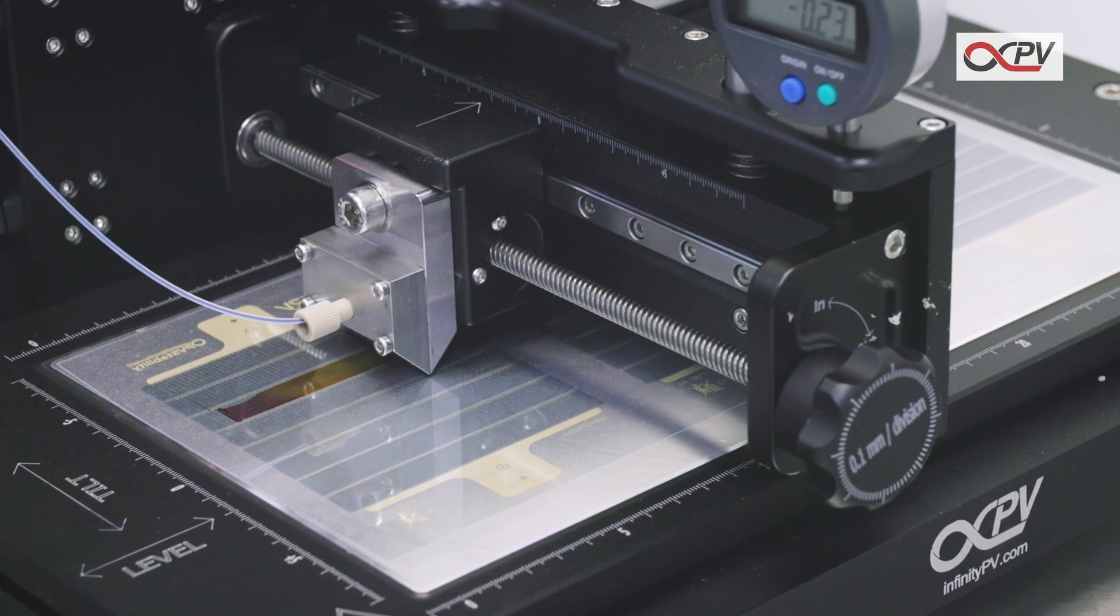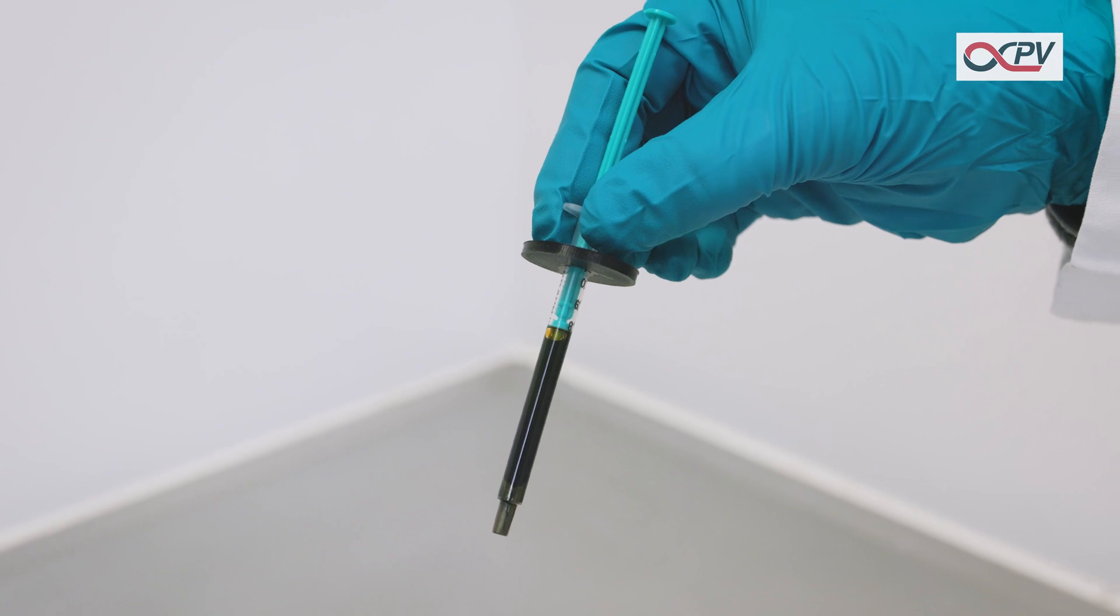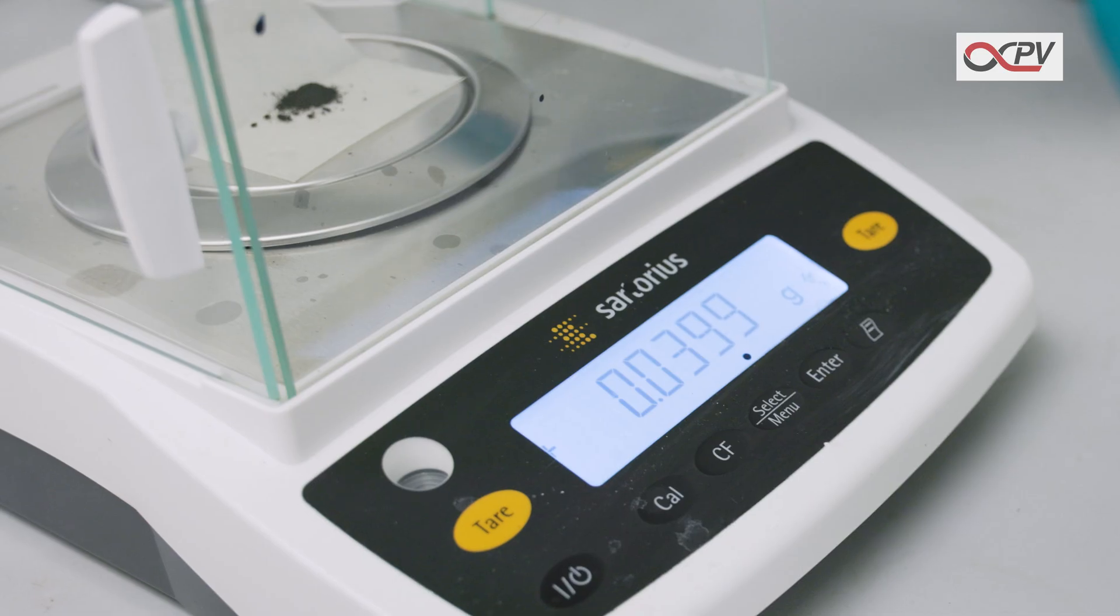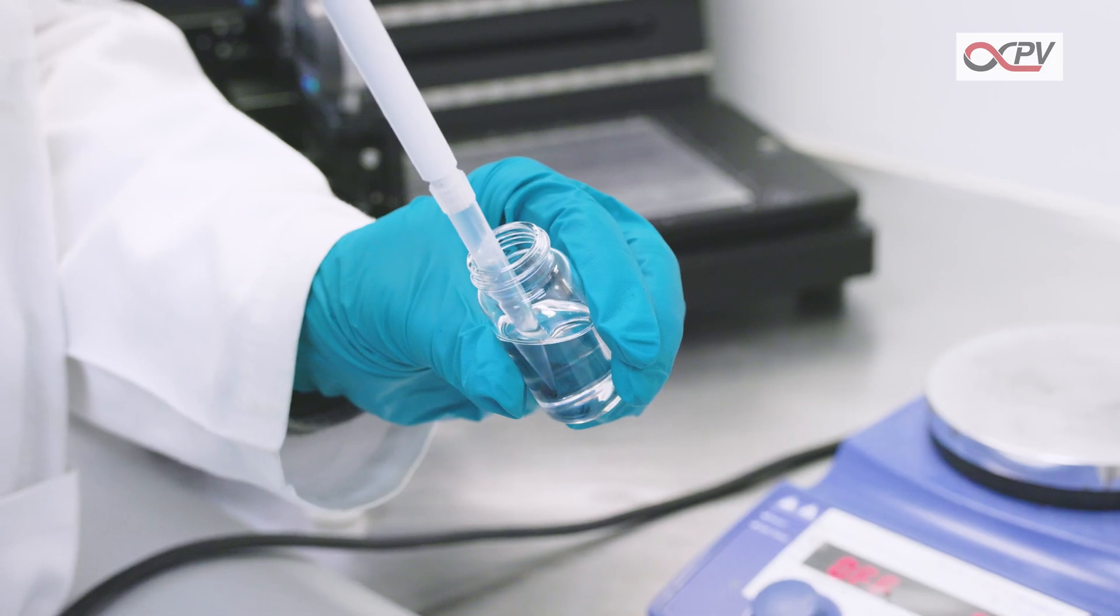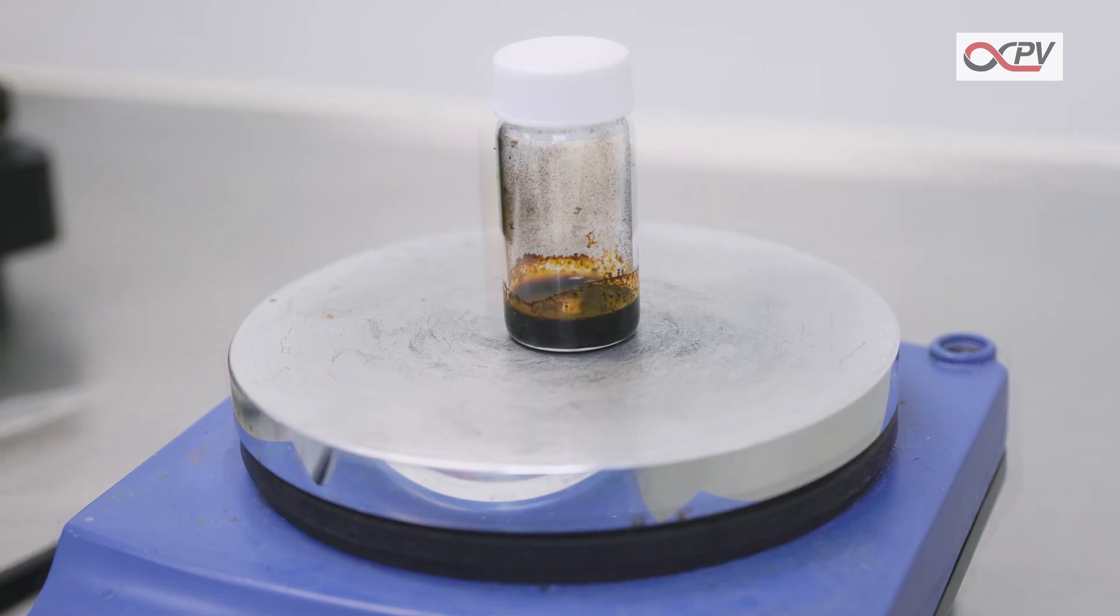How to make solar cells using the Slot Dye Coater by Infinity PV. Start by preparing the ink. Weigh off the active material, add solvents, and stir at elevated temperatures to dissolve the active material.